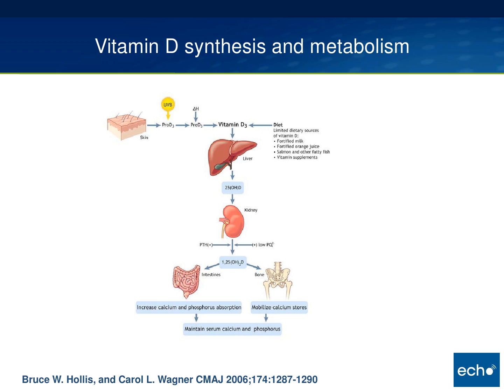Vitamin D3 is synthesized in the skin from exposure to sunlight—the UVB rays—from the cholesterol precursors in the skin, the 7-dehydrocholesterol, and that's the pro-D3 hormone that gets converted to vitamin D3.